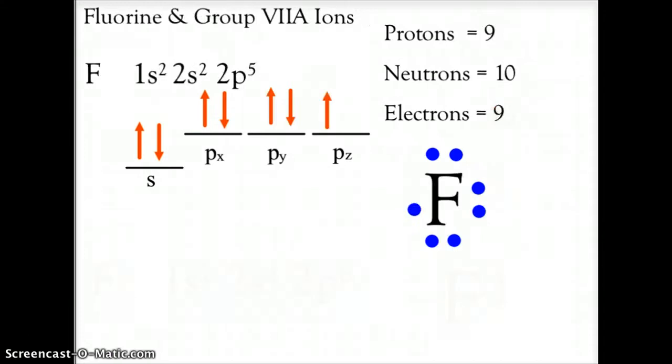Now, we will move to the other side of the periodic table, and we'll look at the fluorine atom, and this is in group 7A, and we're talking about the ions in the halogen group. Fluorine, 1s² 2s² 2p⁵. This gives us 7 valence electrons, 2 in the s and 5 in the p. That means we have 9 protons, 10 neutrons, and 9 electrons, and when we look at the Lewis dot diagram, we see that it has 1 empty space.